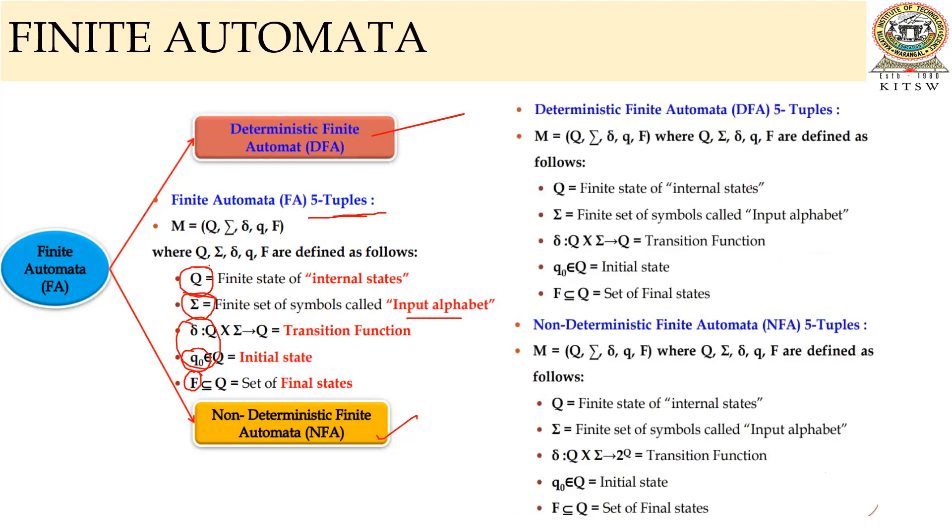Coming to deterministic finite automata, what we are going to discuss in this lecture video. Deterministic finite automata is also a five-tuple, and the same elements. Capital Q is a finite state of internal states, and sigma is a set of input symbols or input alphabets. The gamma is a transition function.